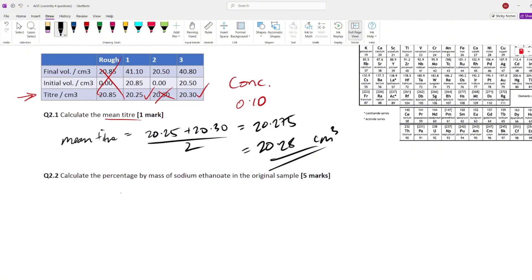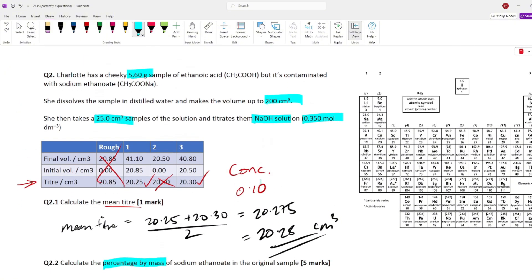Let's move on to the more complicated titration stage of this experiment. So, we need to calculate the percentage by mass of sodium ethanoate. So, this impurity, this contaminant in this sample.